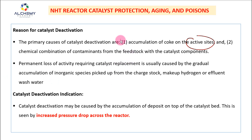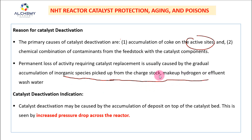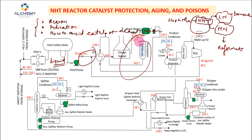The major cause of catalyst deactivation comes from contaminants in the liquid feedstock. Catalyst deactivation can be permanent or temporary. Permanent loss of activity requires catalyst replacement, and this occurs when there is accumulation of inorganic species picked up from the charge stock, makeup hydrogen, effluent, or wash water — mostly from the charge stock. Over time these inorganic components deposit on the top of the catalyst layer, reducing the effectiveness of the NHT reactor catalyst.